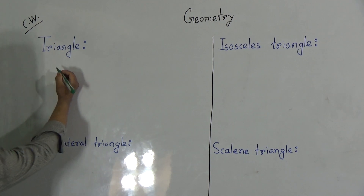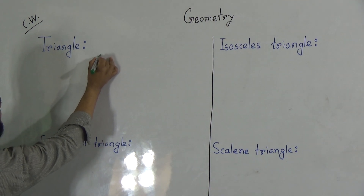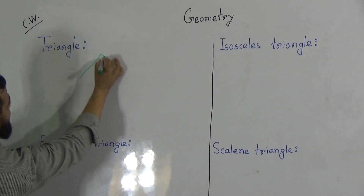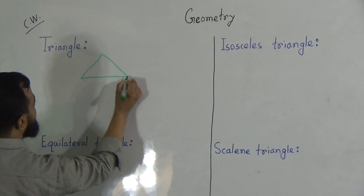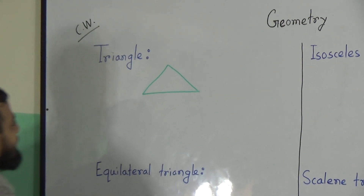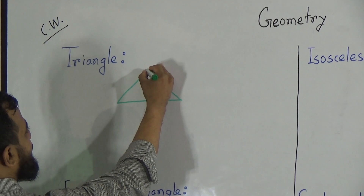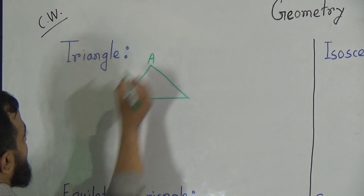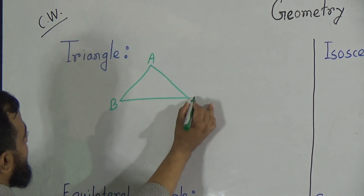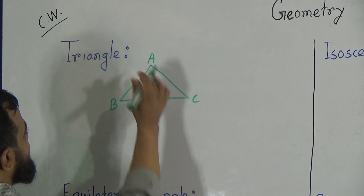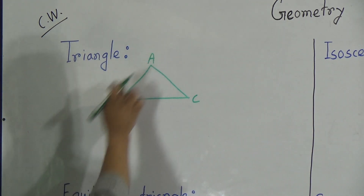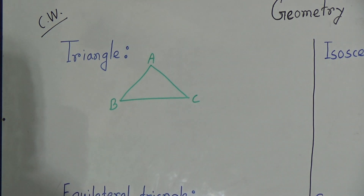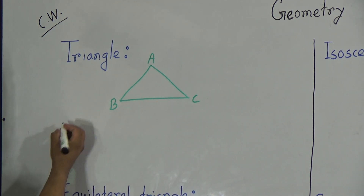Now, first of all, this is a triangle. You must draw with your free hand — don't use the ruler. Like my writing, you should write down. Suppose the three vertices are A, B, and C. Then A, B, C is a triangle, and you should write the description of this drawing below it.